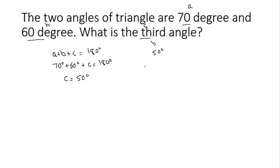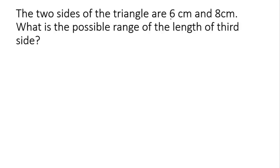Next question: the two sides of a triangle are 6 cm and 8 cm, what is the possible range of the length of the third side? Let the third side be equal to x. We are going to use the important conclusion about triangles: the length of the third side can never be smaller than the difference of the other two sides, which is 2 cm.